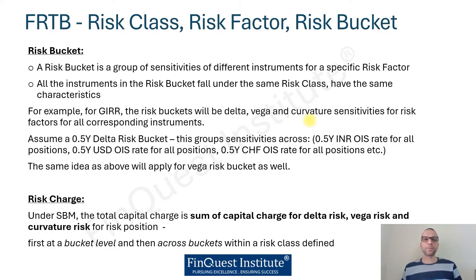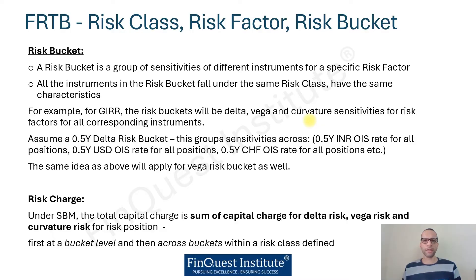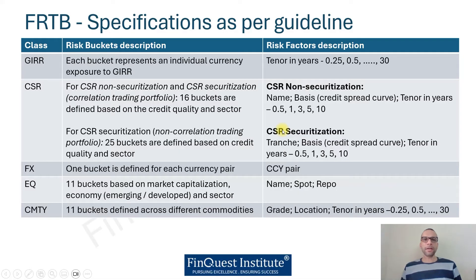For example, a 0.5-year delta risk bucket can be defined across different currencies for a specific set of risk factors. For OIS, the 0.5-year delta risk bucket can include factors like 0.5-year INR OIS, 0.5-year USD OIS, or 0.5-year CHF OIS. Similarly, a one-year delta risk bucket covers one-year INR OIS, one-year CHF OIS, and so on. These can also be worked out for a vega risk bucket, and from an SBM perspective, the capital charge is computed by summing the delta, vega, and curvature risk charges.